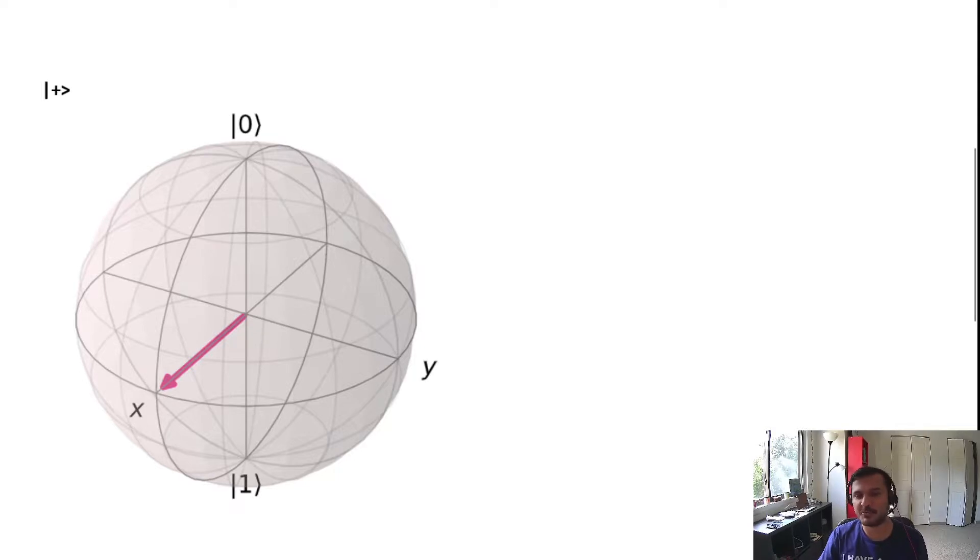The plus state is here and the minus state would be on the other side of it. This way you can have different representations. You can have three representations: one that is eigenstates of the X basis, one that is eigenstates of the Y basis, and one that is eigenbasis of the Z Pauli matrix.